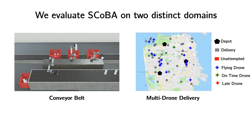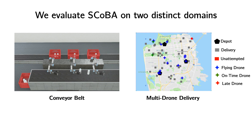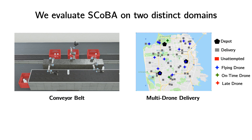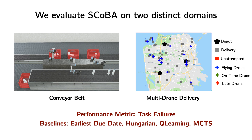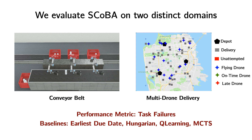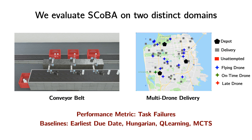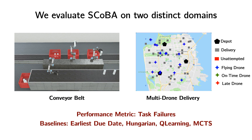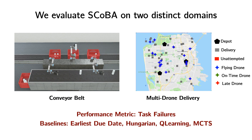To evaluate SCOBA, we set up two distinct robotics-inspired simulation domains from earlier: conveyor belt pick-and-place and multi-drone delivery dispatch. We baseline SCOBA against a range of multi-robot allocation approaches from scheduling, such as earliest due date and the Hungarian algorithm, and from sequential decision-making by framing it as an MDP and applying Q-Learning and Monte Carlo Tree Search.